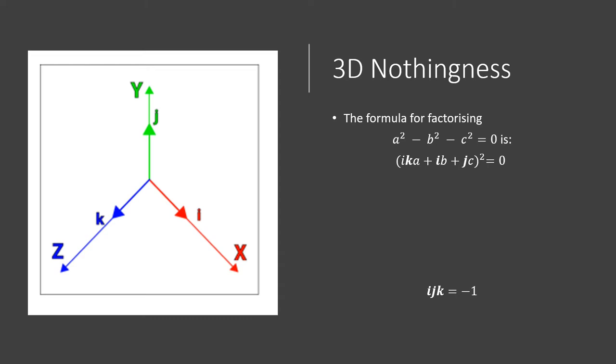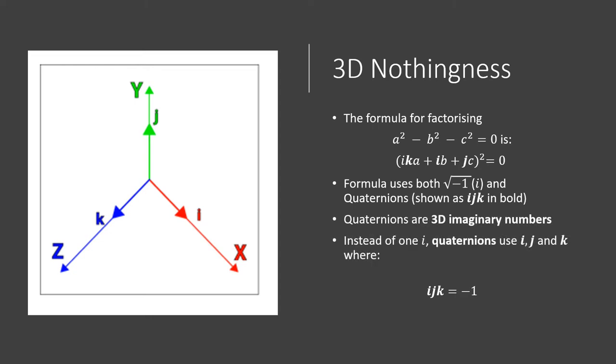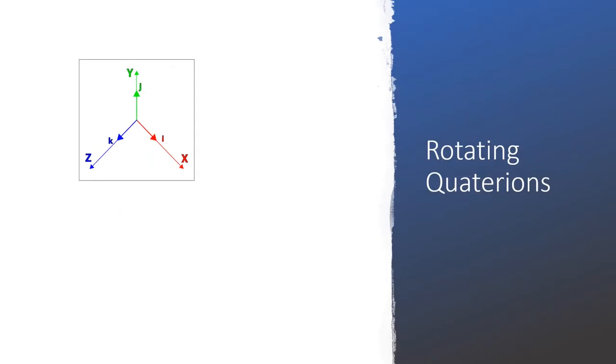So let's look at Peter's equation. He says that a squared minus b squared minus c squared can be factorised as (ika + ib + jc) all squared is equal to zero. We can see from the equation that we've got a, b, and c. But we're not clear what the i's, k's, and j's are all about. And then it seems confusing because one of the i's is in bold and another one isn't. Now this is because the bold letter i, j, k's are part of Hamilton's quaternion system. Now the quaternions are 3D imaginary numbers where i squared equals minus 1, j squared equals minus 1, and k squared equals minus 1. But there's also the i which isn't bold, and that's an ordinary imaginary number which is just the square root of minus 1. But the key to this equation is the inclusion of the quaternions.